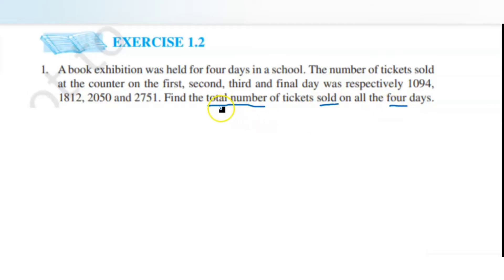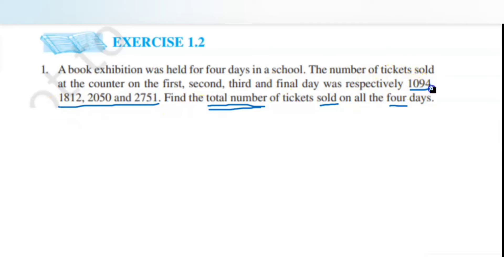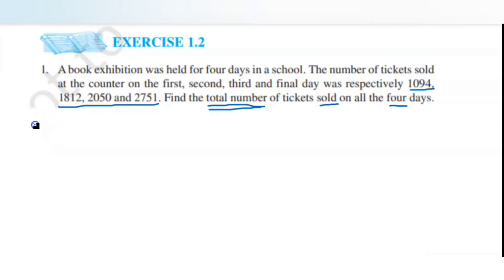Here it is asking to find the total number of tickets sold. 'Total' means we need to find the sum — it's easy to understand. So we need to add up all four numbers, which represent the number of tickets sold on each of the four days. Let us write the first statement: number of tickets sold on the first day.